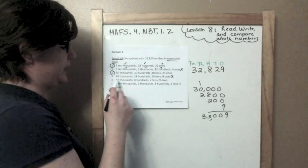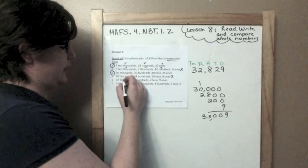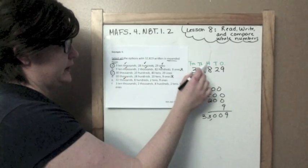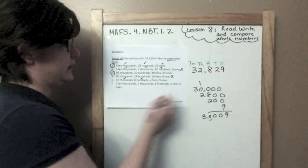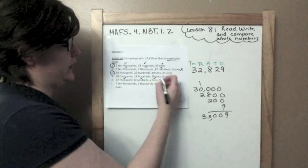Okay. Thirty-two, I'm on D now. I'm sorry, E. Thirty-two thousands, yes. Eight hundreds, yes. Two tens, yes. Nine ones, yes.